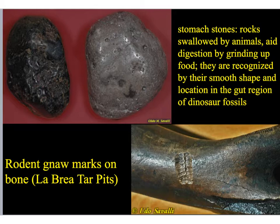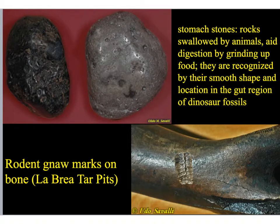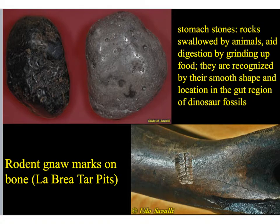A couple more examples of trace fossils. These are called stomach stones — imagine finding a large articulated dinosaur fossil, and in the midsection where the stomach would be, you find beautifully polished stones that have been rubbing against each other. These are evidence that the organism ate stones to help break down food, just like many organisms do today. Another example: a bone from some organism that has gnaw marks from a rodent in it. That makes it a trace fossil of whatever rodent left behind those marks.